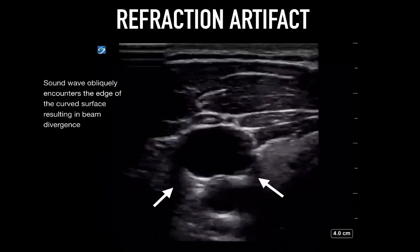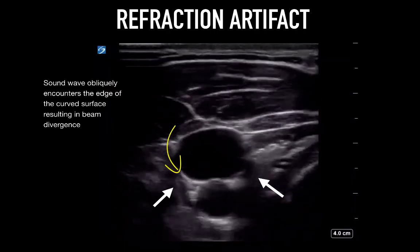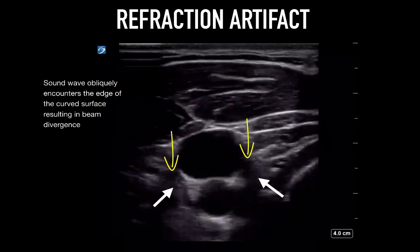Finally, our last artifact: refraction artifact. This refers to essentially edge shadowing, which we can see with the white arrows. When the sound wave obliquely encounters the edge of a curved surface, the result is beam divergence and a loss of energy. This leads to formation of a shadow, most commonly along the edge of a vessel or cyst in a transverse orientation.